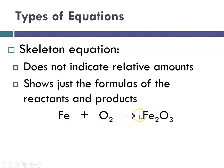And a skeleton equation is where you take your words and turn them into symbols. It does not indicate the relative amounts. It just shows you the formulas of the reactants and the products. So from the previous page where I said iron plus oxygen react to produce iron three oxide. Here's my iron, here's my oxygen, here's my iron three oxide. This is not balanced. There's one iron on this side and two on this side. However, again, this is what we refer to as a so-called skeleton equation.